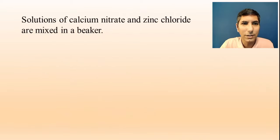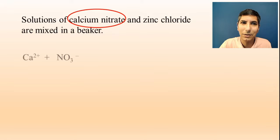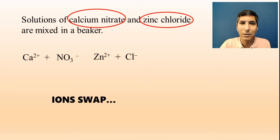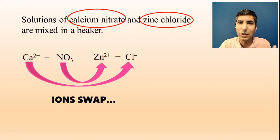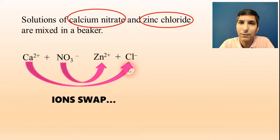Let's try another example. Solutions of calcium nitrate and zinc chloride are mixed in a beaker. Calcium nitrate — all nitrates are soluble — so that would be Ca²+ and NO₃⁻. Then we have zinc chloride, which is also soluble: Zn²+ and Cl⁻. These ions are going to try to swap out, and we have to ask ourselves which of these is going to make the insoluble precipitate. All nitrates are soluble, and chlorides are soluble too, and this is not an exception. So it looks like none of these will make the insoluble precipitate.